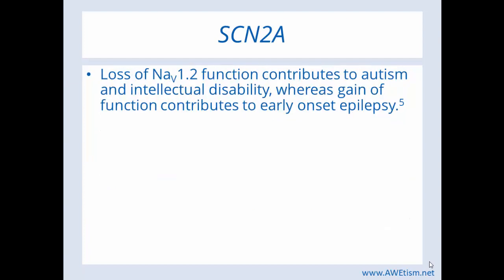If you remember from my previous videos explaining genetics and the effects a mutation can have — sometimes when you have a mutation, you have a loss of function, and sometimes you have a gain of function. You might think a gain of function would be good, but here's an example. In SCN2A, if there is a mutation where you have a loss of function of that sodium channel, it contributes to autism and intellectual disability. Whereas a gain of function — meaning that sodium channel actually functions better — that type of mutation contributes to early onset epilepsy. It's not always best to have an increase in function.